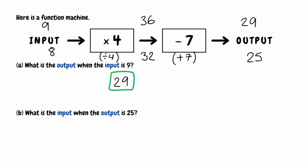We can check our answer: if the input is 8, we work from left to right. We do 8 multiplied by 4, which gives us 32, and then take away 7, which does give us 25. So we know we've got the correct answer — when the output is 25, the input is 8. The key takeaway is that when we're given the output of a function machine, we have to work backwards and do the opposite operations.